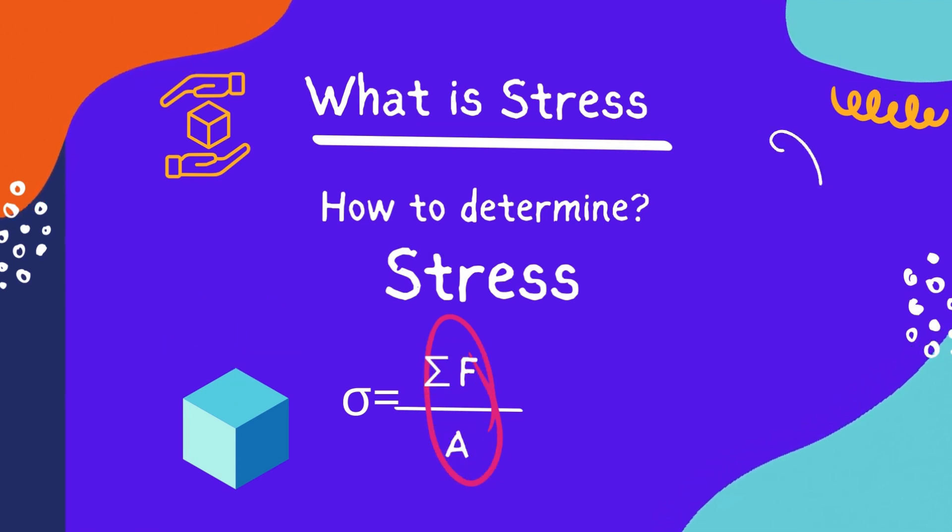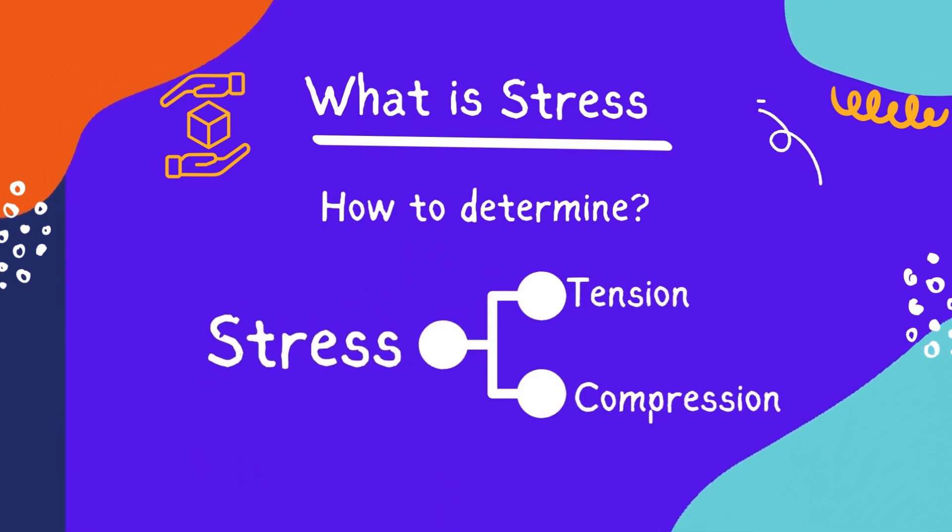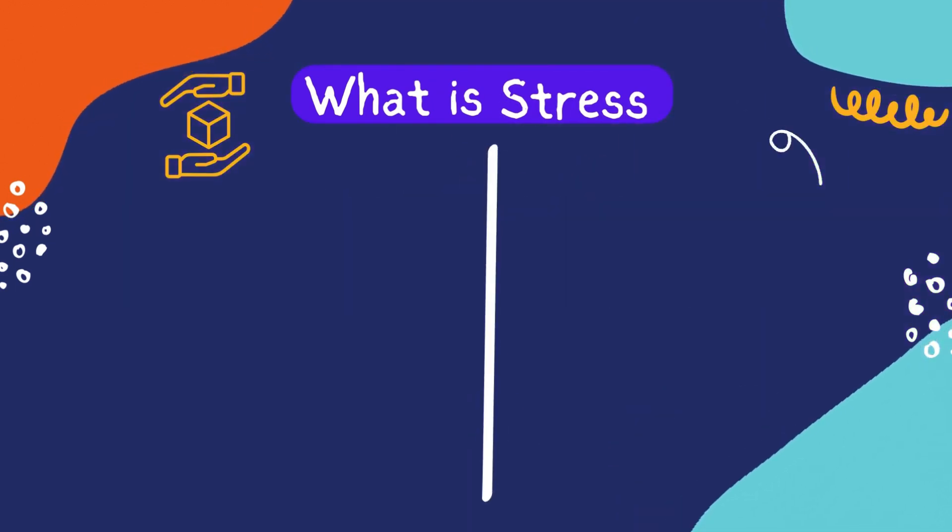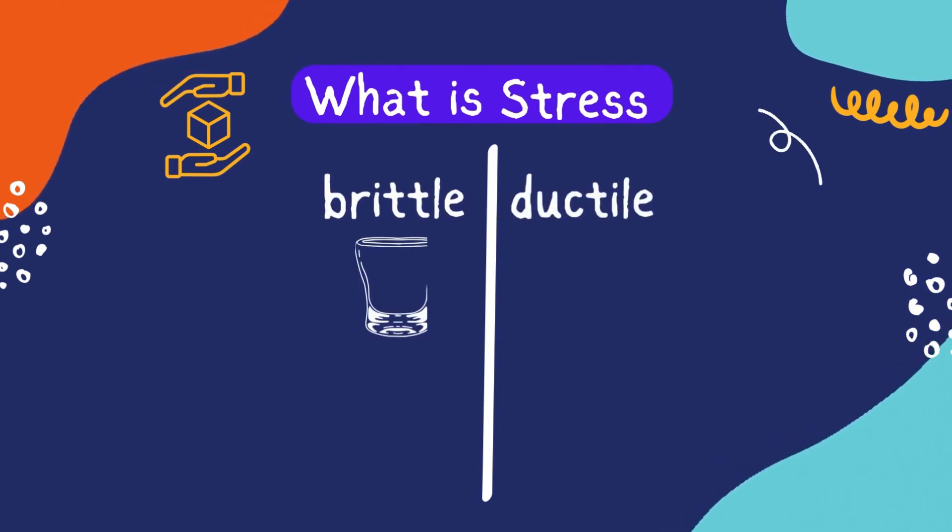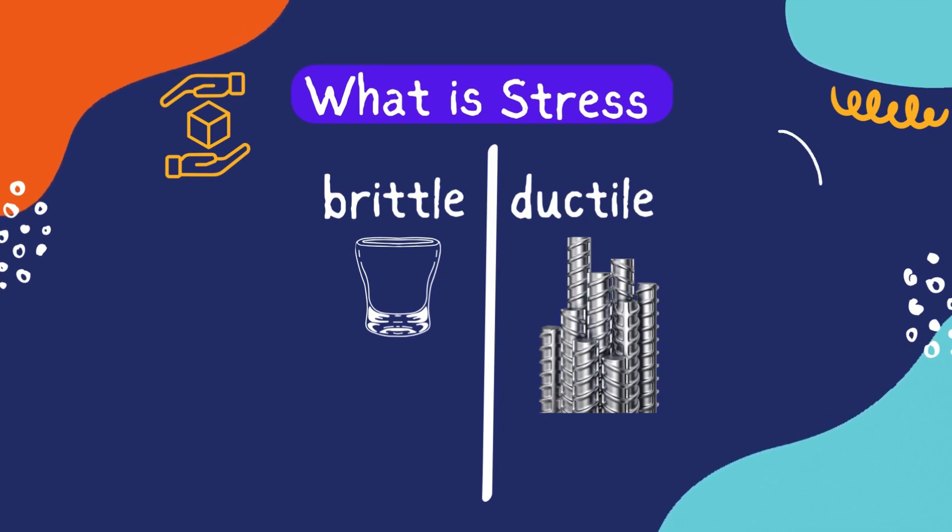There are two basic types of stresses: tension and compression stresses. You know why some materials are called brittle or some ductile? Like glass is brittle while a steel bar is ductile. Well, that's because glass takes less stress before failure, while steel takes more stress before failure.